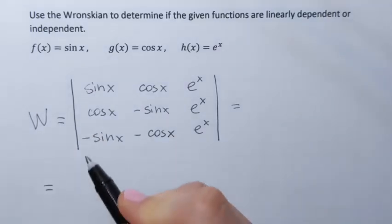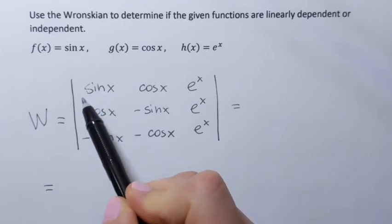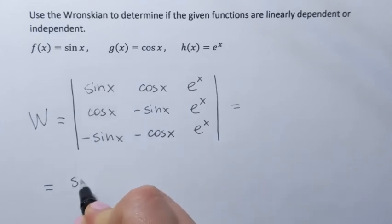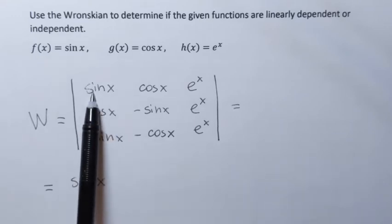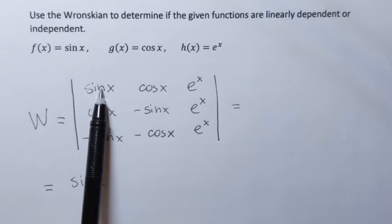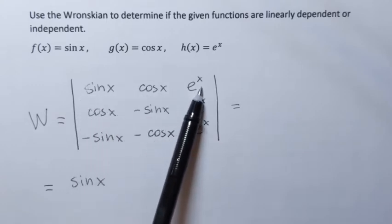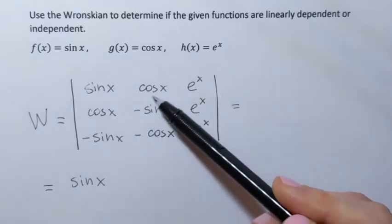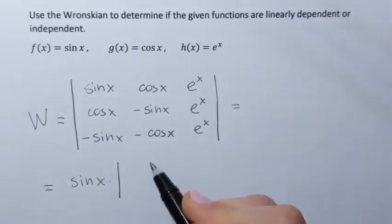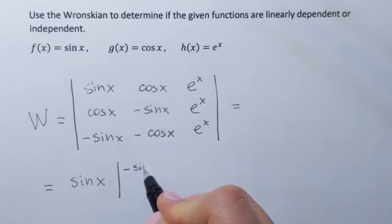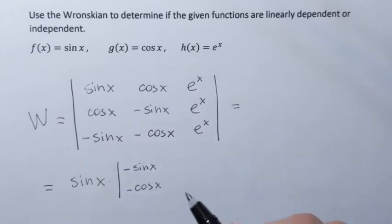To calculate the determinant using the first column, choose the first element, sine of x. That element has to be multiplied by the determinant of the smaller matrix. Since I'm on the first element, I cross out the first row and the first column in my mind, and the remaining elements form that smaller matrix. So that will be multiplied by the determinant of the matrix: negative sine x, negative cosine x, e to the power x, e to the power x.